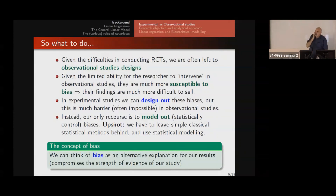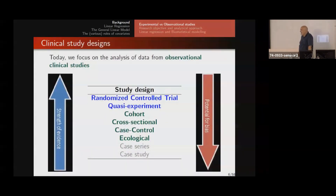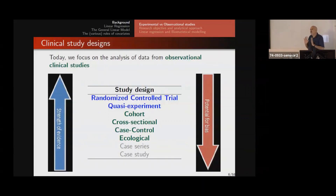Bias can be thought of as an alternative explanation for the results we observe — for example, confounding bias where we might have more males in one group than another, interfering with our study effect. Here is a table of primary data studies in the clinical sciences. The ones in blue are experimental studies. The ones in green are what we're concerned with today: cohort studies, cross-sectional studies, case-control studies, and ecological studies — though most of you will be doing cohort, cross-sectional, or case-control studies.